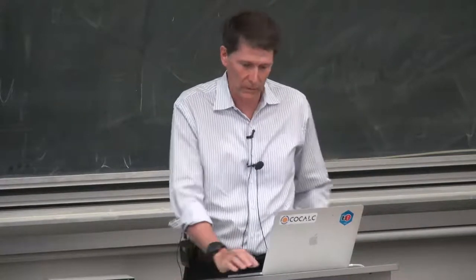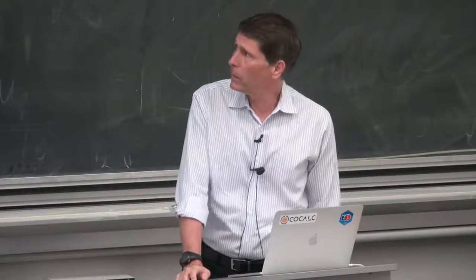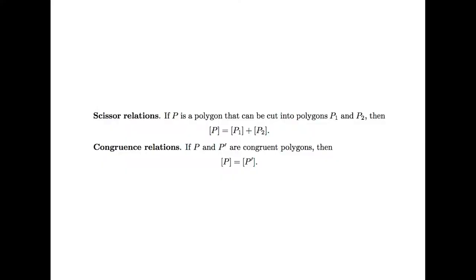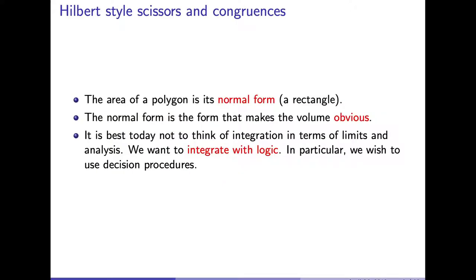So we can think of the area of a polygon as being represented by the rectangle that gives its area. Instead of thinking of area as a number, we're going to think of it, still quite geometrically, as a representative shape for a given region that we're trying to measure. What we use here are scissor relations — we cut things into pieces — and congruence relations — we move pieces about and reassemble. So the area of a polygon we think of as its normal form, in this case a rectangle. We want something that makes the volume obvious to us, and we'd like to do things as algorithmically as possible with decision procedures.